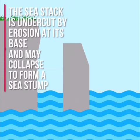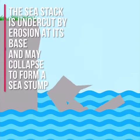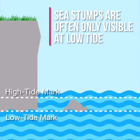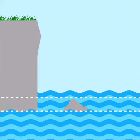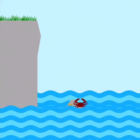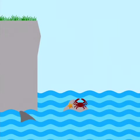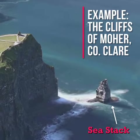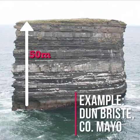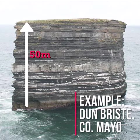Over time the sea stack is also undercut by erosion at its base and may collapse to leave a sea stump. Sea stumps are often only visible at low tide. Examples of sea stacks can be seen at the Cliffs of Moher in County Clare, and also at Doonbrysta in County Mayo, which stands at almost 50 meters in height.